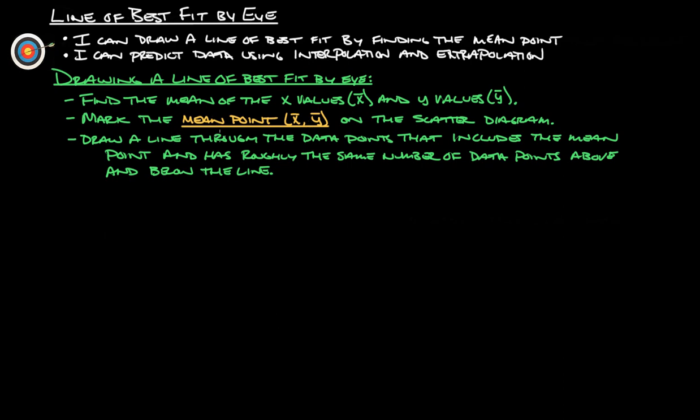This is very important for doing a line of best fit by eye. We're going to mark that mean point on the scatter diagram. Then we're going to draw a line through the data points that includes the mean point and has roughly the same number of data points above and below the line.